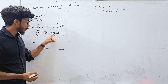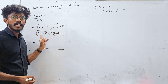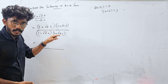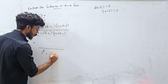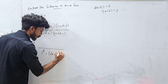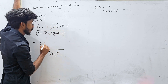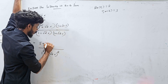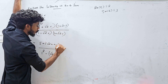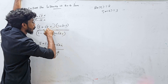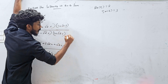Using the identity (a minus b)(a plus b) equals a squared minus b squared: the denominator becomes (1 minus root 2i)(1 plus root 2i) = 1 squared minus (root 2i) squared. The numerator is multiplied term by term: 5 into 1, then 5 into root 2i, plus root 2i into 1, plus root 2i into root 2i.